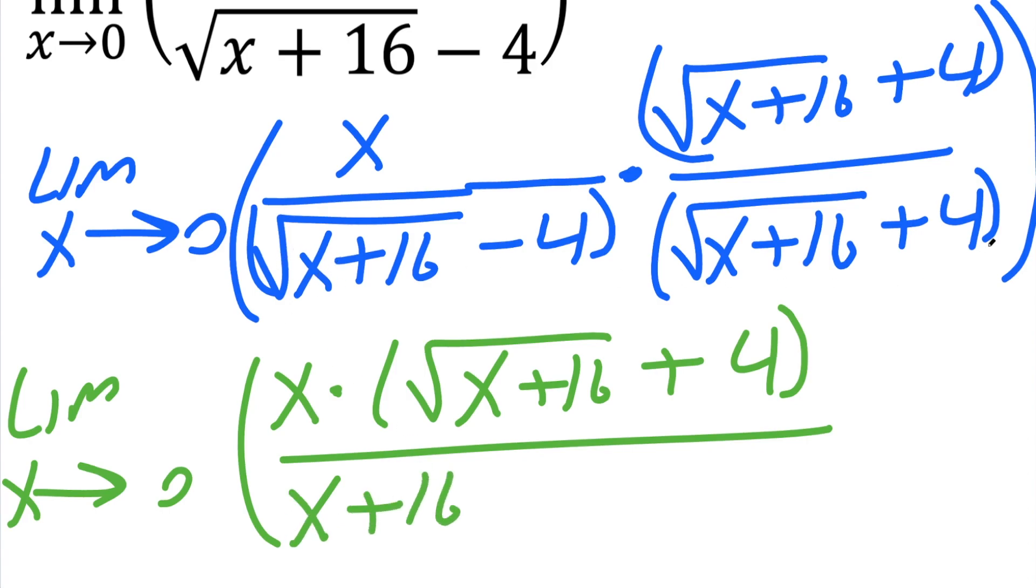Now we do this piece times 4, so we get 4 times the square root of x plus 16. However, we also have to do negative 4 times this piece, and that's going to be negative 4 times the square root of x plus 16, so it cancels. Now we have negative 4 times 4, which is going to be negative 16, closed parentheses.